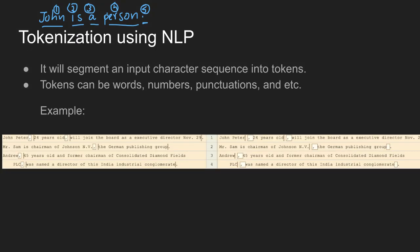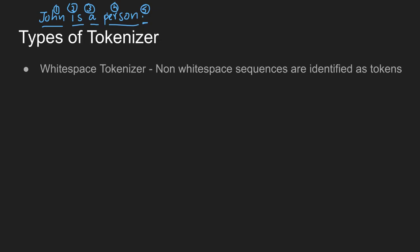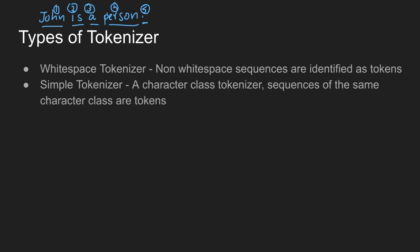The disadvantage is: what does a combined word mean? For example, 'John space Peter space' — 'John' is treated as one word. This is a drawback. The next type is the simple tokenizer, also called a character class tokenizer. Sequences of the same character classes are tokens. We can separate the comma, the white space, and the full stop. We can define these rules explicitly.